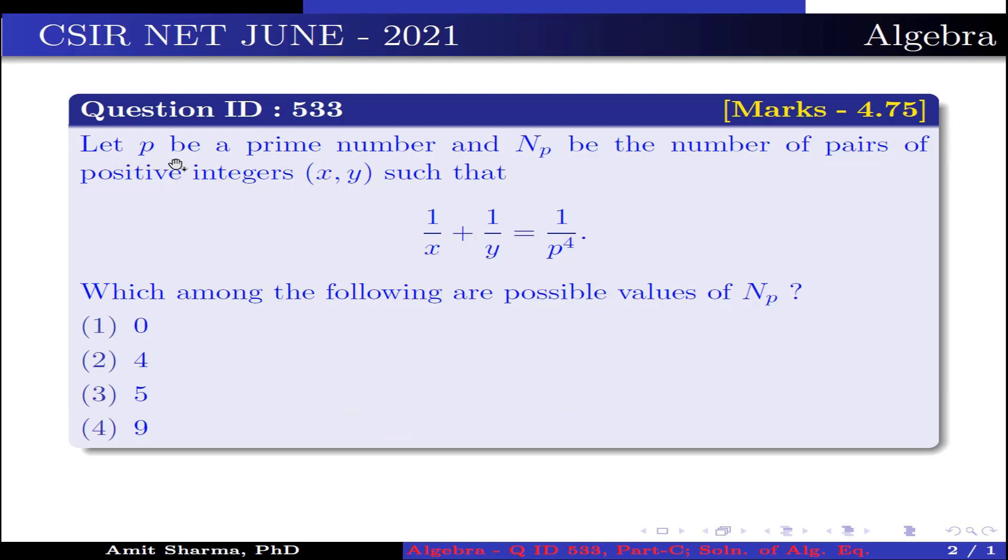Question is: let P be a prime number and NP be the number of pairs of positive integers such that 1/x + 1/y = 1/P^4. Which among the following are possible values of NP? Option 1: 0, option 2: 4, option 3: 5, option 4: 9.